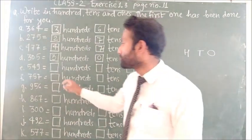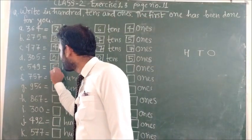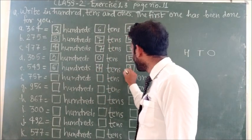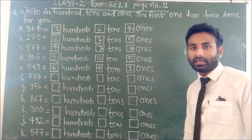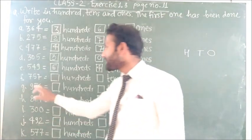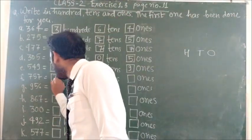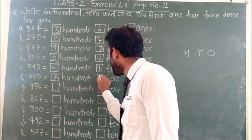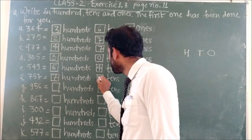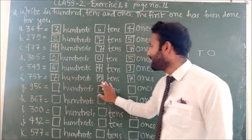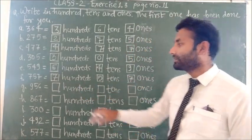Next is 549, so 5 hundreds, 4 tens, and 9 ones. Next question is 757, so 7 hundreds, 5 tens, and 7 ones.